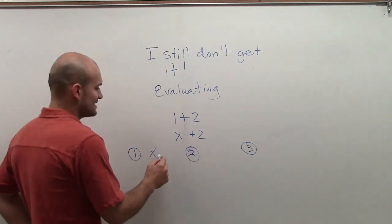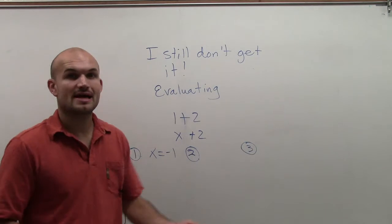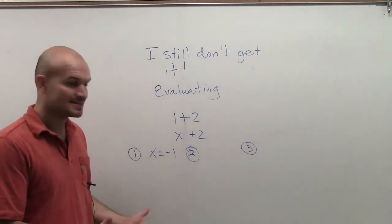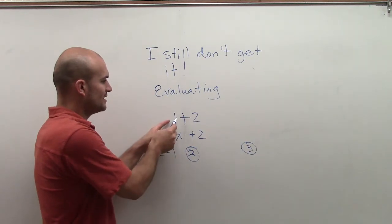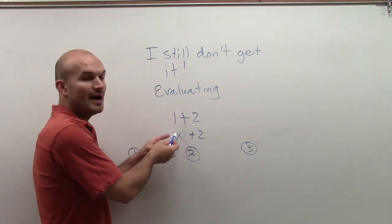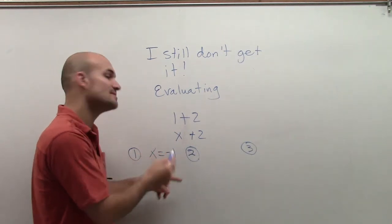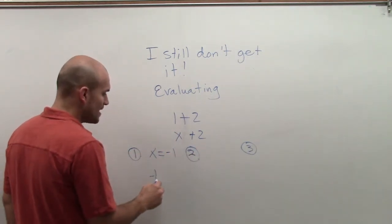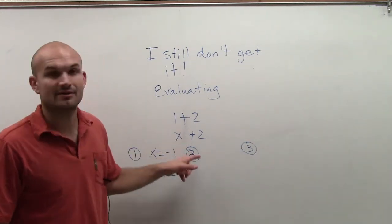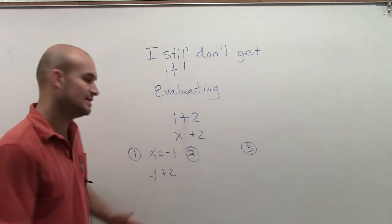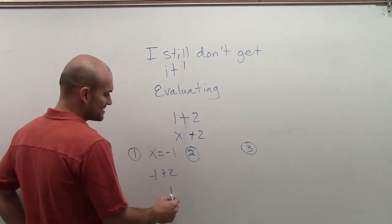Let's say I say x equals negative 1. So let's say I want the value of x to be negative 1. That means, remember I said here I have 1 plus 2. Well, here I have x plus 2. I don't know what the value of x is. So if I say now the value of x is negative 1, that's why we just say you just plug in whatever that number is in for x because that's the value we need to figure out. So negative 1 plus 2 is just going to give us 1.